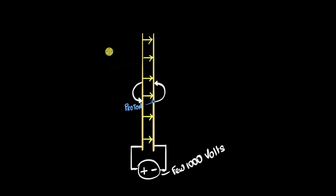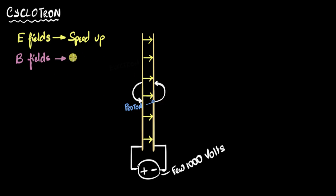So what we can do, the whole idea is we use electric fields to speed up our proton, but we use magnetic fields to make them turn back and re-enter that electric field, so that we can accelerate it over and over again. Remember, magnetic fields do not change the speed of the particles.